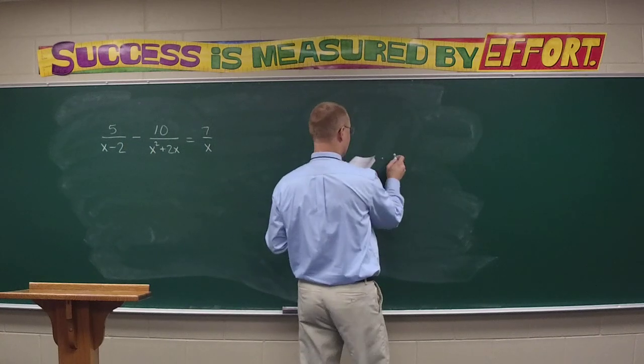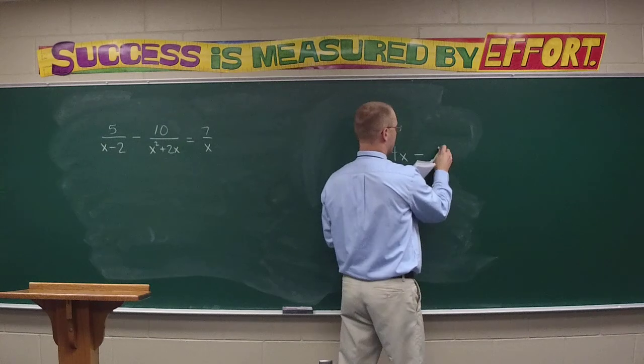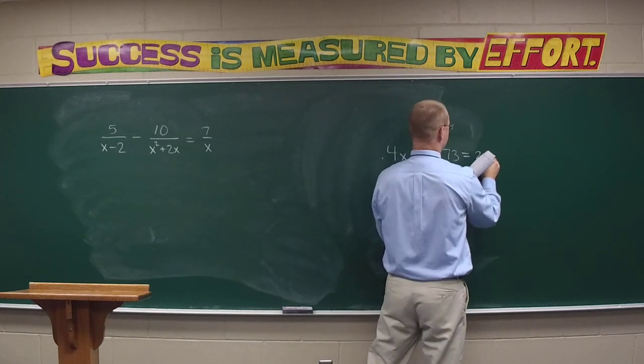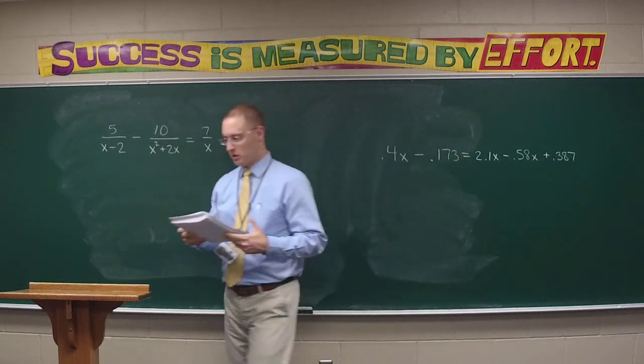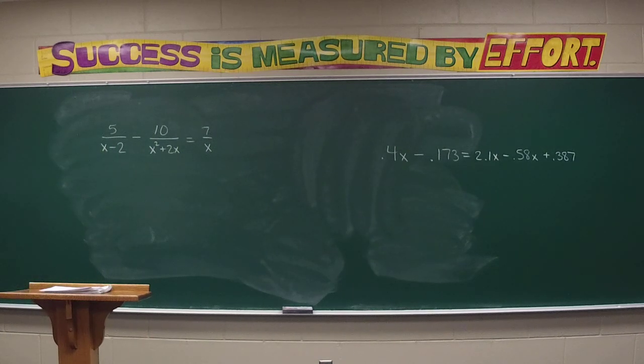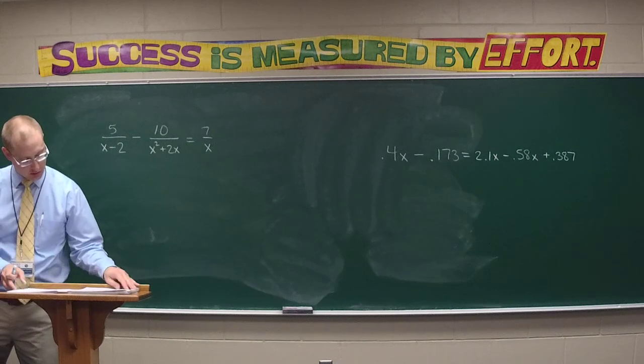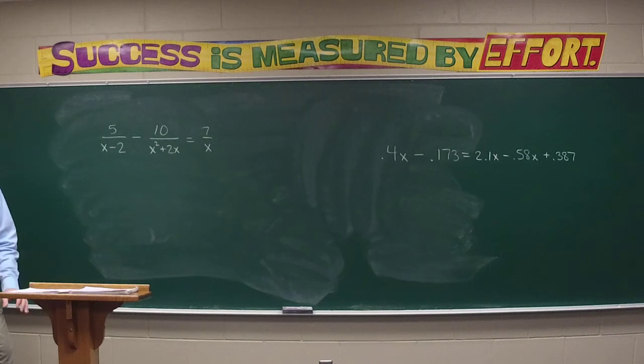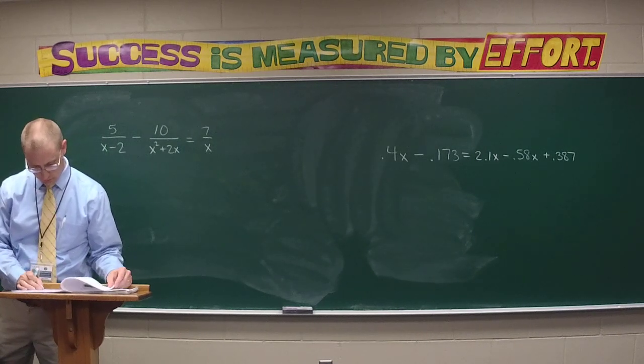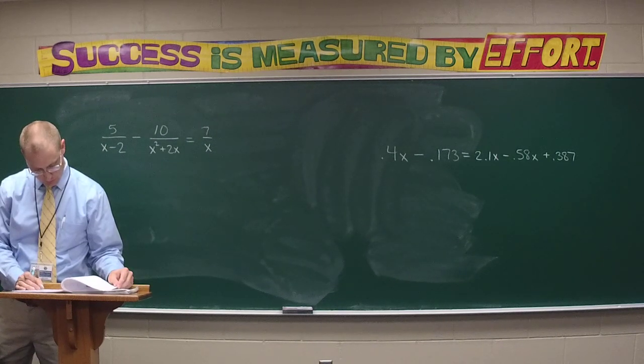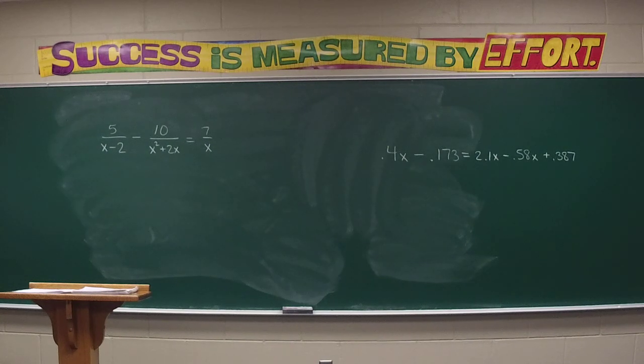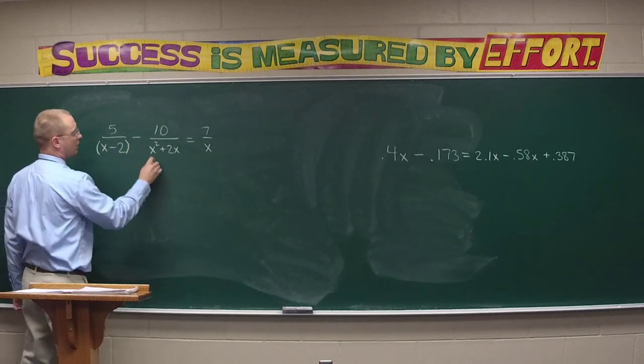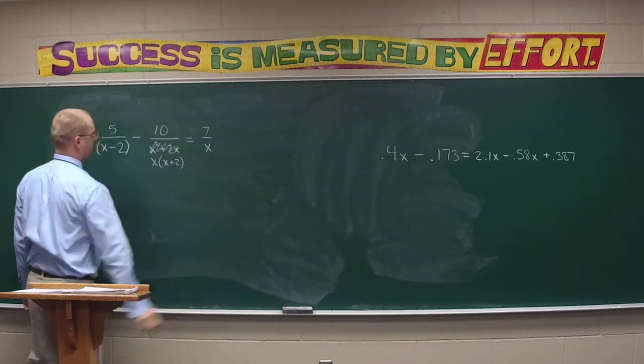This mixed thing is one fraction equal to one fraction - we call it a proportion. How do we solve proportions? Multiply the means by the extremes, or more succinctly, cross multiply.